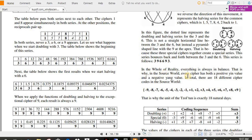In the whole of reality, everything is always in balance. That is why, in the source world, every cipher has both a positive yin value and a negative yang value. In total, there are 18 different cipher codes in the source world. Negative 9, negative 8, negative 7, and then you start back up with positive 1, 2, 3, 4. That is why the unit of the Tzolkin is exactly 18 natural days.